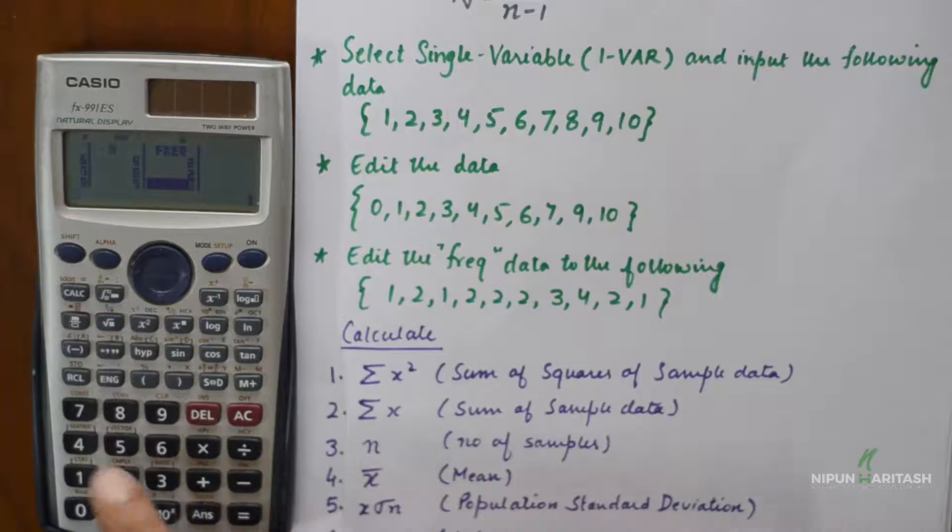So now let's enter frequency. The frequency of 0 is 1, and then for 1 is 2, and then 1 again, then 2, 2, 2, 3, 4, 2, and 1.